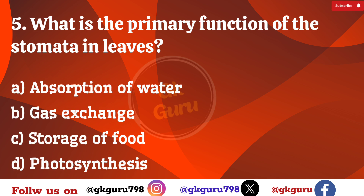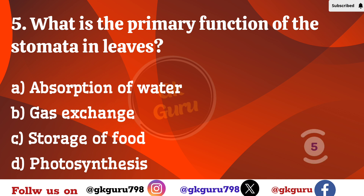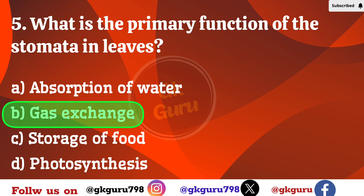Fifth question: What is the primary function of the stomata in leaves? Option A: absorption of water. Option B: gas exchange. Option C: storage of food. Option D: photosynthesis. Correct answer: Option B, gas exchange.